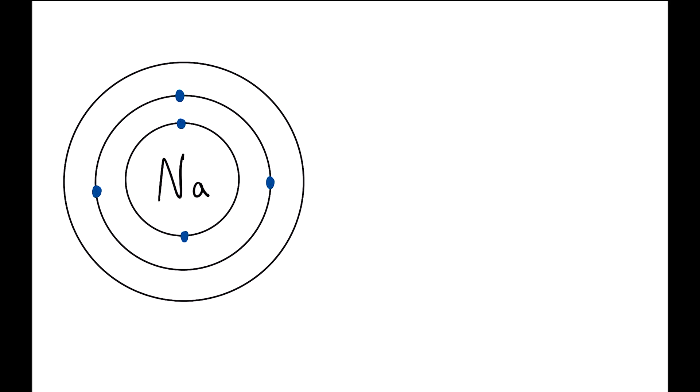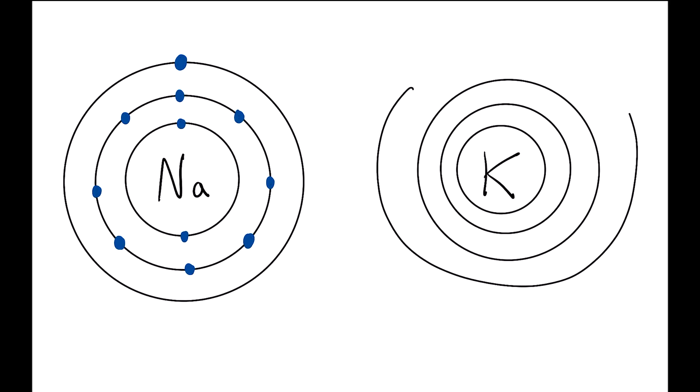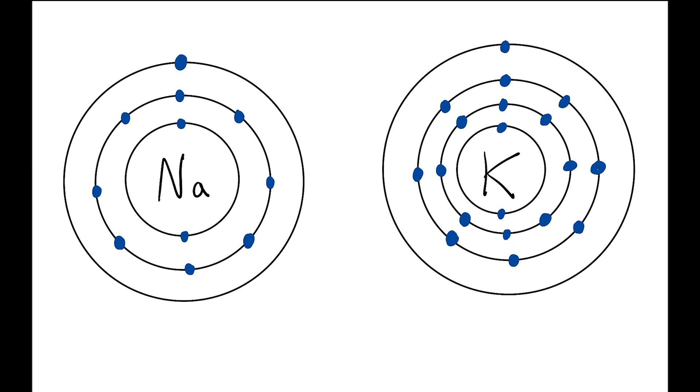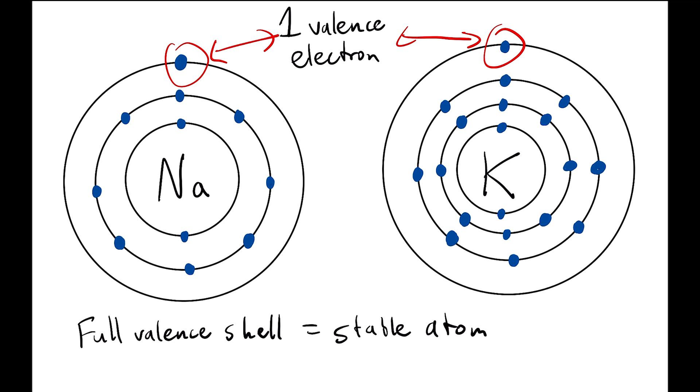To explain why, we have to compare the electronic structure of sodium and potassium. Both of these elements are in the first column of the periodic table, meaning that they have one valence electron in their outermost shell. Atoms are stable with a full valence shell. For sodium and potassium to have a full valence shell, they each need to lose one electron.